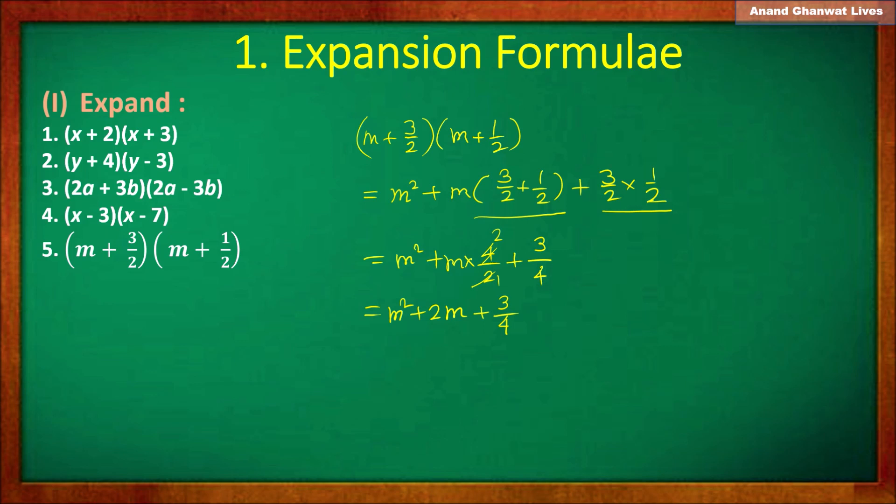In this way we have solved the given examples using the formula (x + a)(x + b) = x² + x(a + b) + ab. I hope that you all understand this formula and its expansion. Thank you.